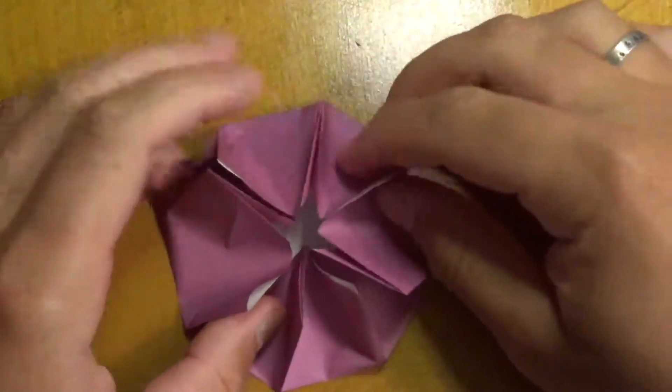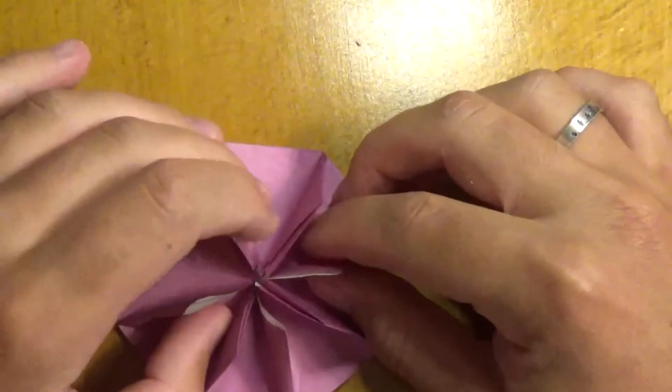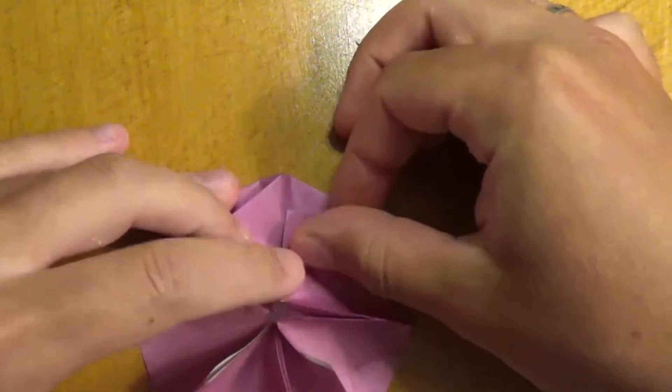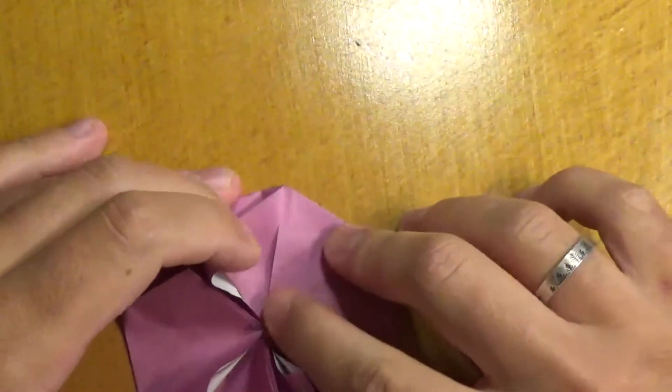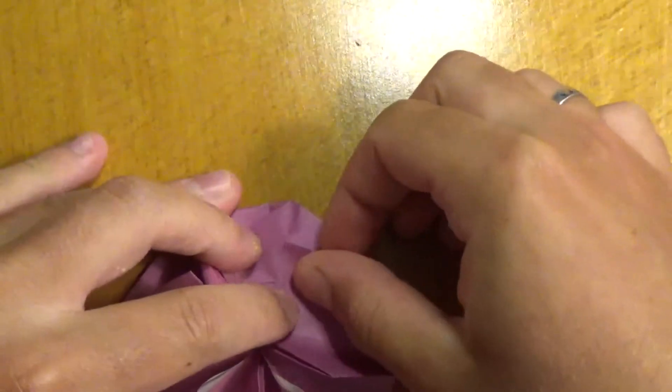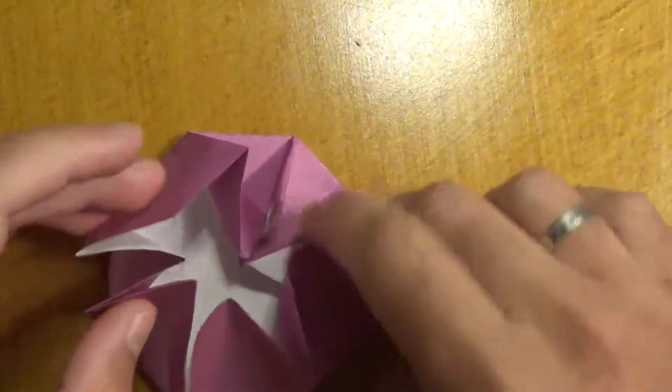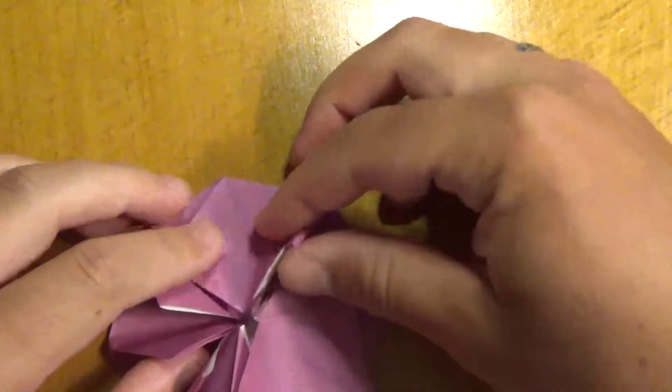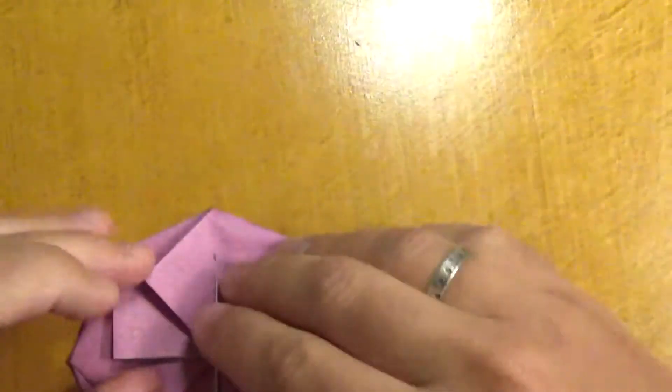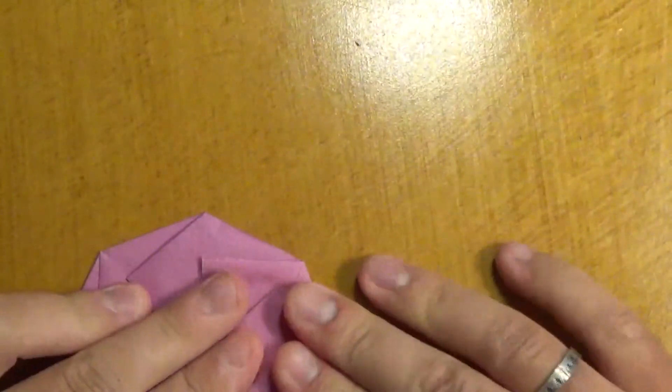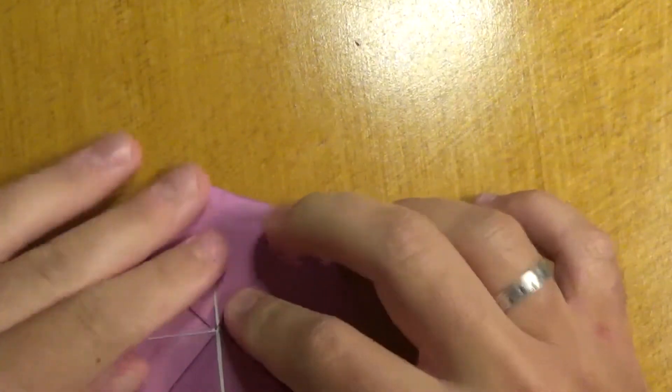All right. Let's zoom in. And then now at this point, we can just flatten all these flaps down. So, I'm going to start right here. So, just flatten it like this. And just keep doing that all the way around. Okay. Like that.